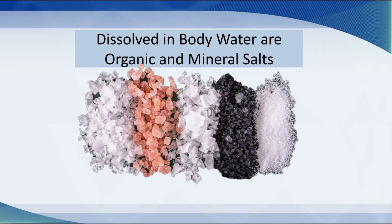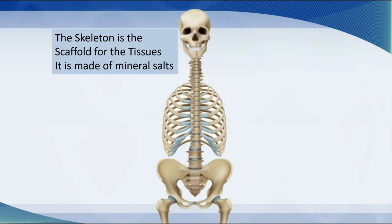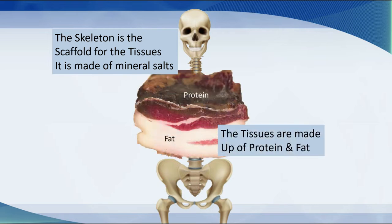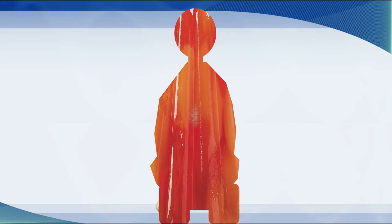Inside this water are dissolved a variety of different organic and mineral salts. But the superstructure is built on a skeleton — a scaffold — and that's made of mineral salts. Then you have all these different tissues that are made up of protein and fat. Wrapped around all of this is a parcel of gelatin.